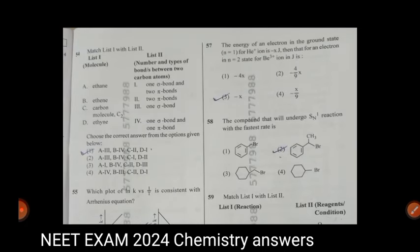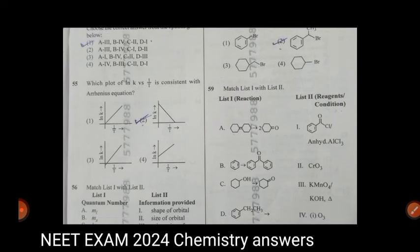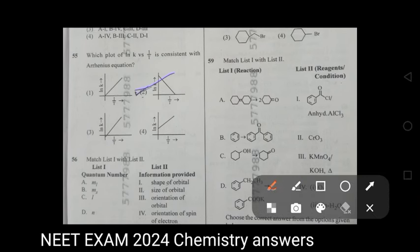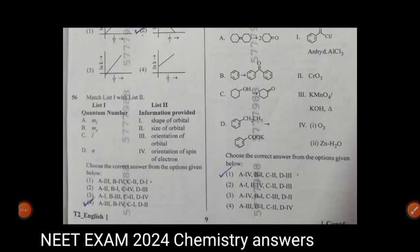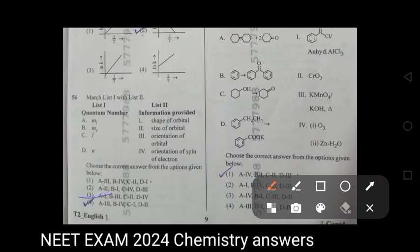Now, we will move to the 54th question. Match list 1st with list 2nd. Option is 1, correct option. In 55, the correct equation is 2nd. Second one is a correct equation. In 56th, match list 1 with list 2. Correct option is 4th.